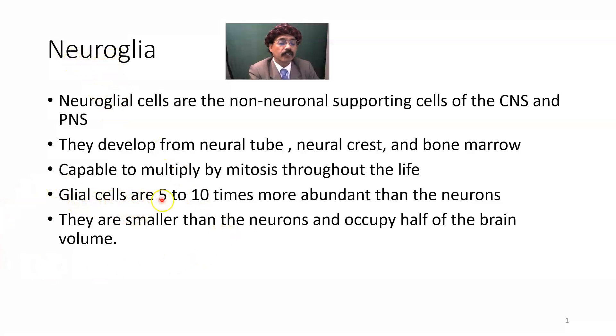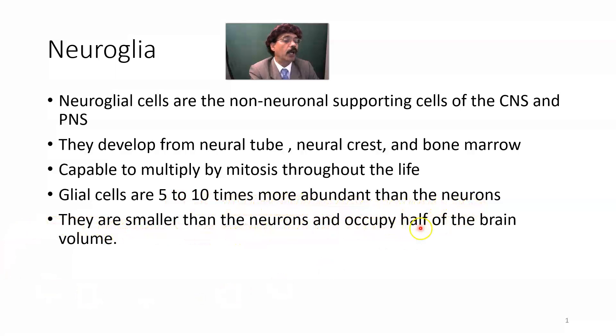Glial cells are 5 to 10 times more abundant than neurons. They are smaller than neurons and occupy half of the brain volume.